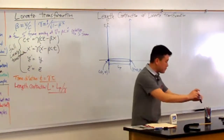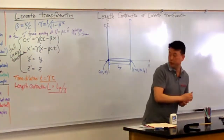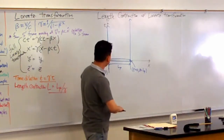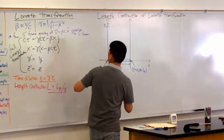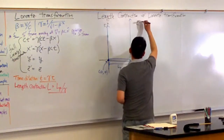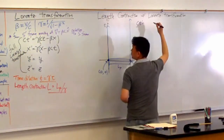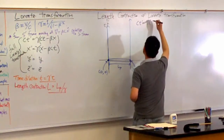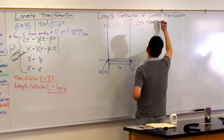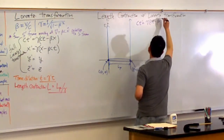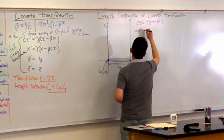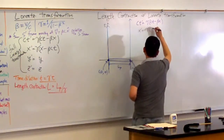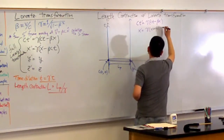This is what someone might do in trying to re-derive length contraction. We know the Lorentz transformation: ct' = γ(ct − βx), and x' = γ(x − βct).